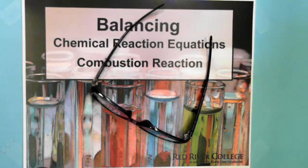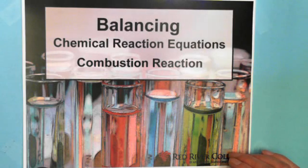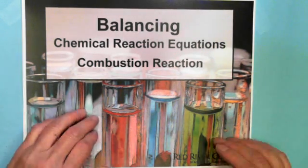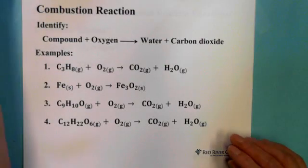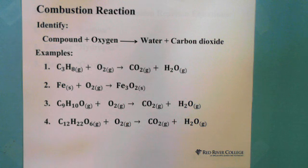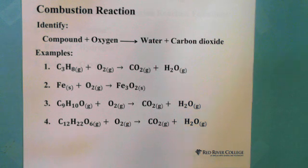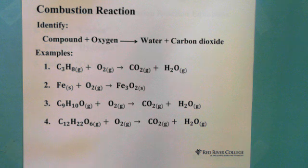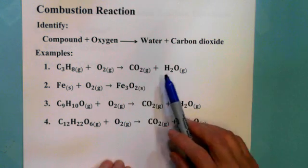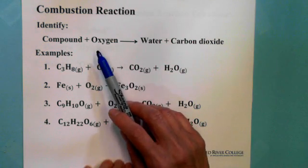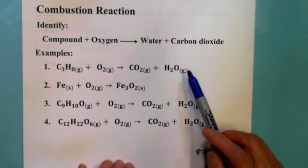Hi, welcome to Wiseguys. For balancing combustion reactions, we need first to identify the combustion reaction. A combustion reaction is: compound plus oxygen produces water and carbon dioxide. For example, C3H8 plus oxygen produces water and carbon dioxide — this matches the definition, so this is a combustion reaction.